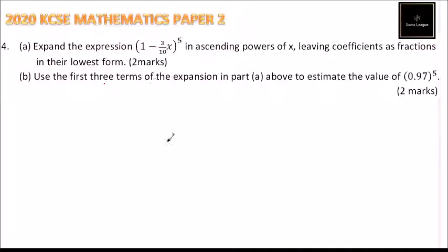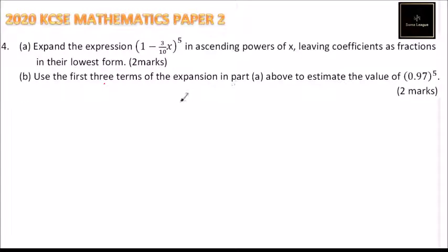This is question number 4, 2020 KCC Mathematics Paper 2, Part A. Expand the expression (1 minus 3 over 10 x) all raised to the power of 5, in ascending powers of x leaving coefficients as fractions in their lowest form. Then use the first three terms of the expansion in Part A above to estimate the value of 0.97 to the power of 5.